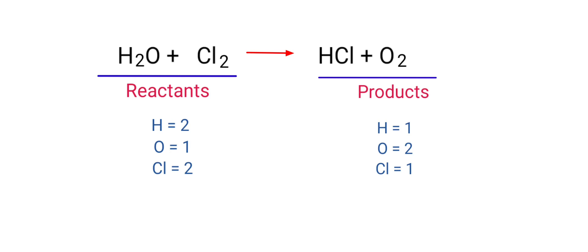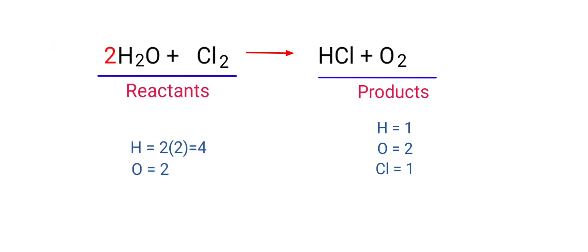In this equation, we need to balance the oxygen atoms first. To do this, we need to put a coefficient of 2 in front of H₂O. The oxygen atoms are now balanced.